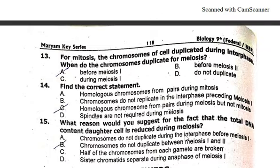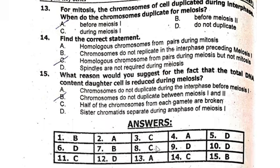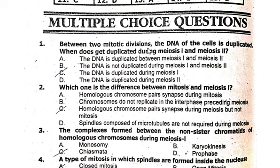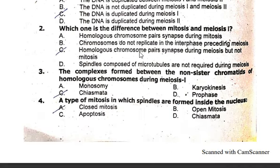Which of the following distinguishes meiosis from mitosis? All three parts differentiate meiosis from mitosis. For mitosis, chromosomes of a cell are duplicated during interphase. When do chromosomes duplicate for meiosis? Before meiosis I. The correct statement is: homologous chromosomes form pairs during meiosis but not mitosis. What reason explains why total DNA content of a cell is reduced during meiosis? Chromosomes do not duplicate between meiosis I and II. A type of mitosis in which spindles are formed inside the nucleus is called closed mitosis.